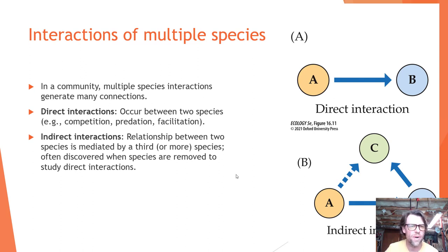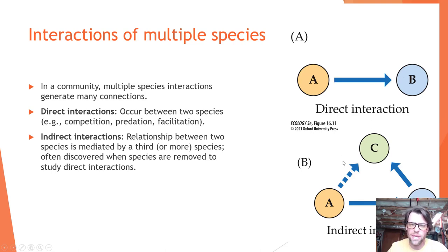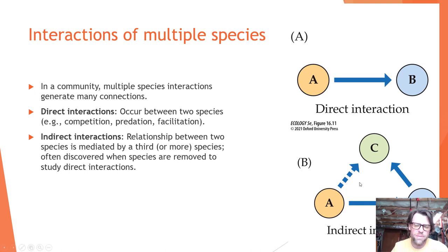In a community, multiple species interactions generate many connections that are both direct and indirect. In direct interactions, there is a direct connection between two species. In an indirect interaction, the relationship between two species is mediated by a third species or more, and this is often only discovered after a species is removed to study the direct interactions.